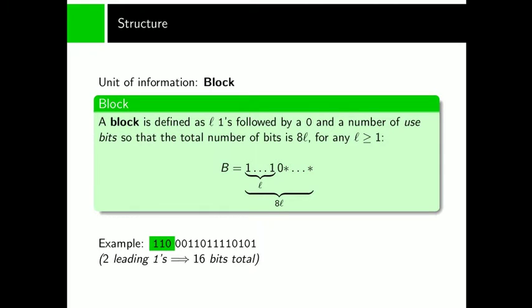The fundamental unit of information in my bit language is the block. A block always has a length of a multiple of eight. This has the advantage that in digital communication eight bits are grouped into one byte, so we can always represent the bit language as a sequence of bytes. A block always starts with one or more ones followed by a zero. The number of ones multiplied by eight is the total length of the block. A block starting with 1 0 has a total length of eight. A block starting with 1 1 0 has a total length of 16 and so on.